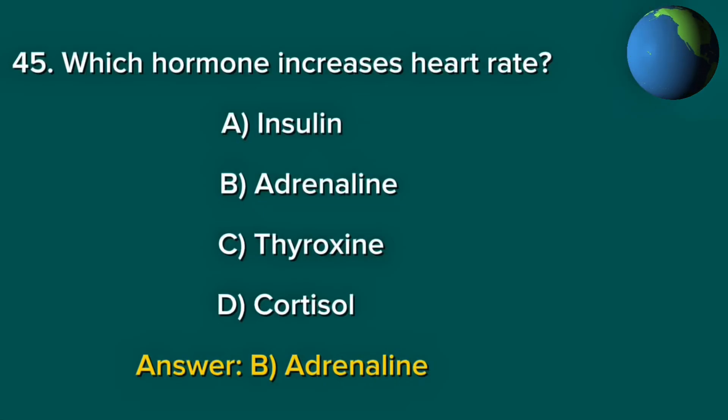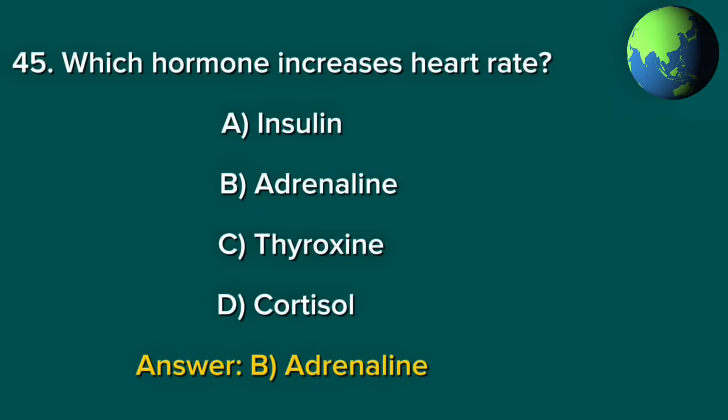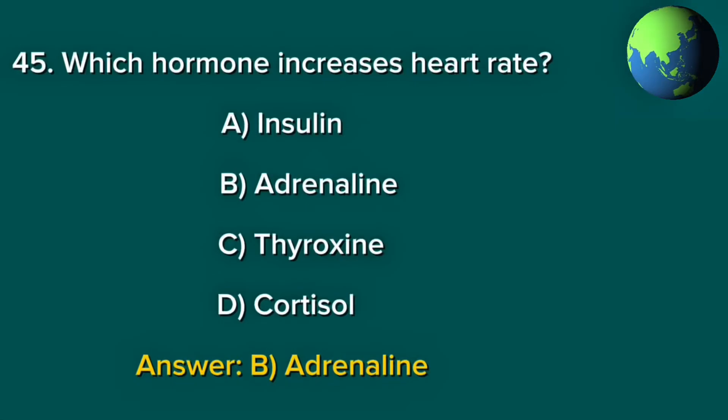Question 45. Which hormone increases heart rate? A. Insulin. B. Adrenaline. C. Thyroxine. D. Cortisol. Answer: B. Adrenaline.